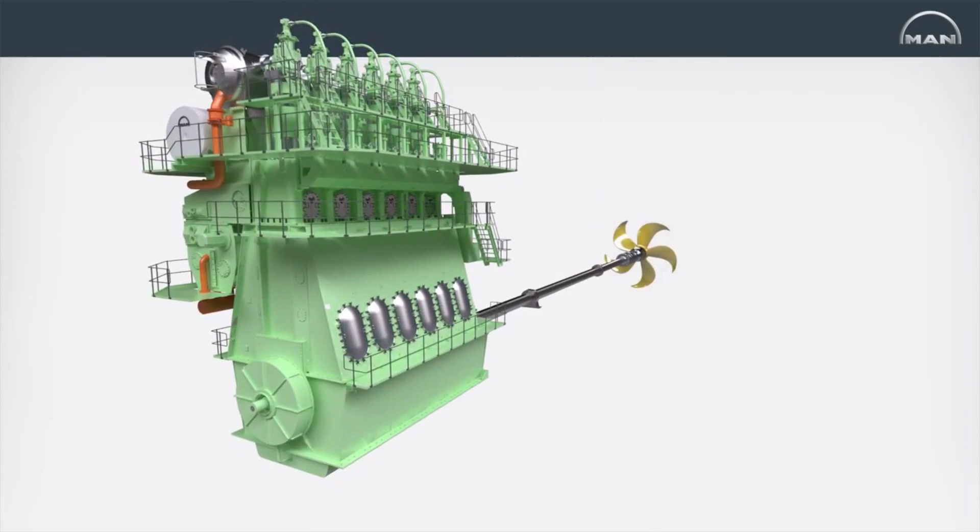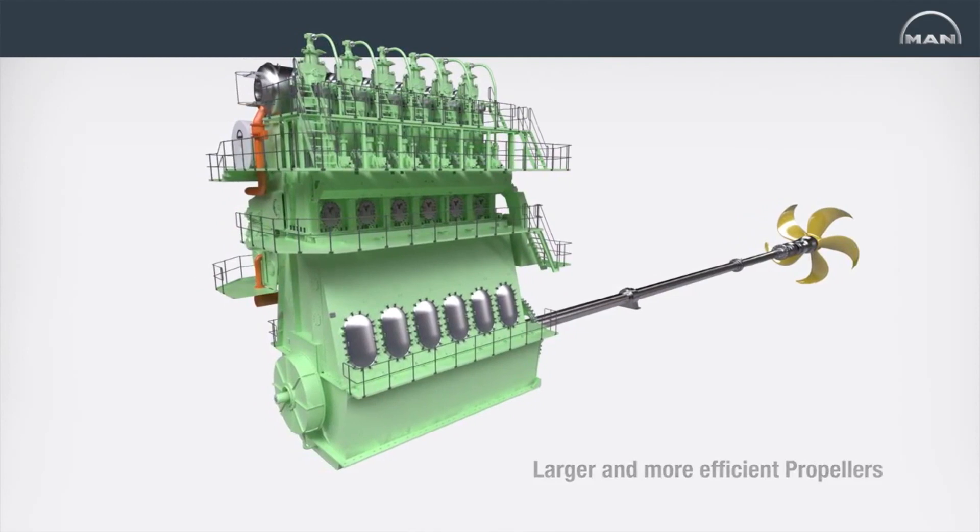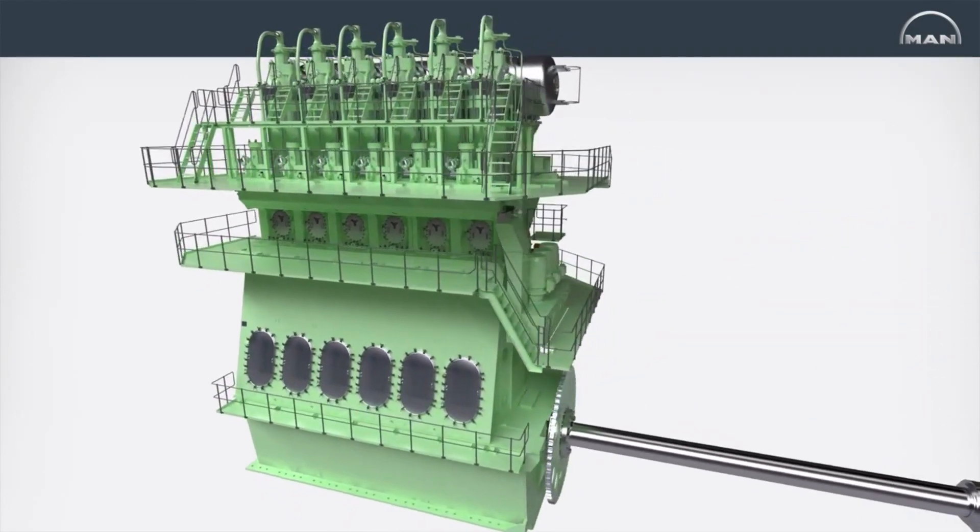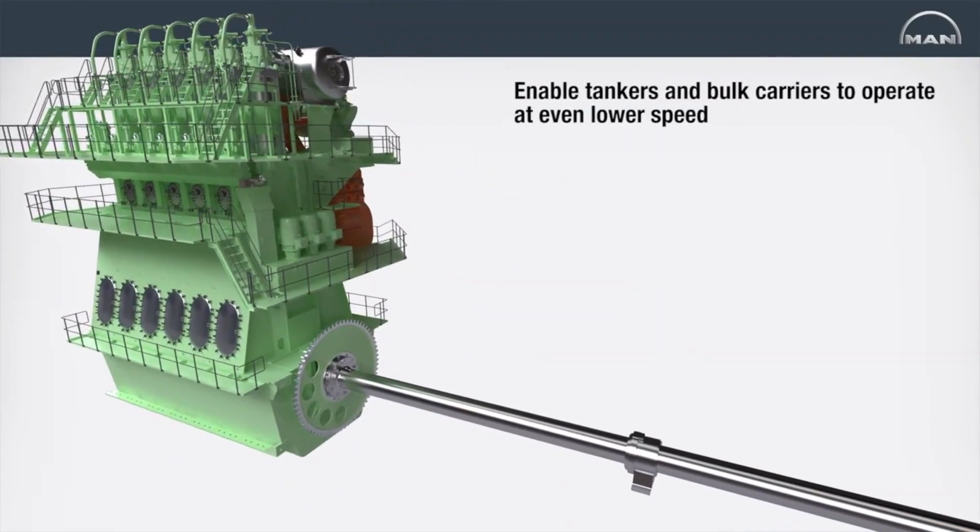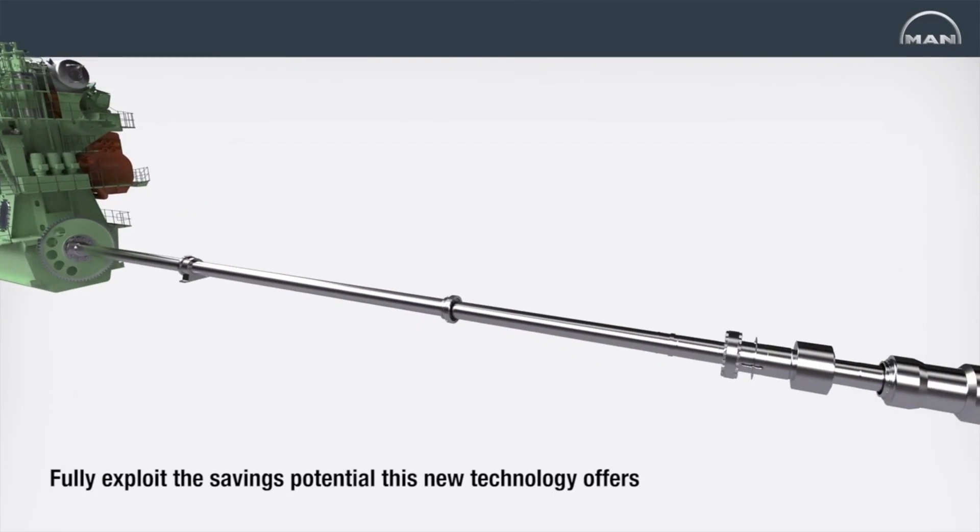Using the latest AFTAL designs that allow the use of larger and more efficient propellers, the new MAN B&W G-Type engines will enable tankers and bulk carriers to operate at even lower speeds and fully exploit the savings potential this new technology offers.